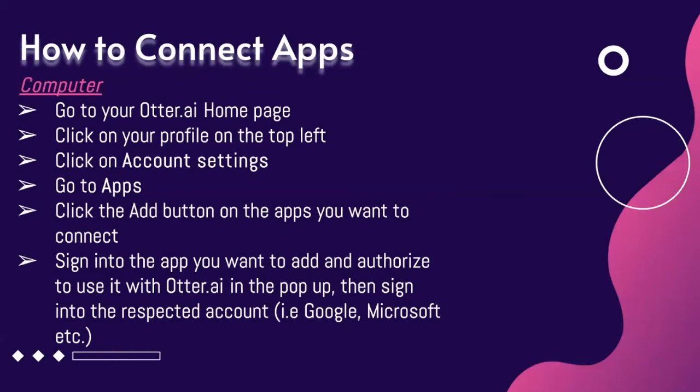To connect apps on the computer, go to the Otter.ai home page, click on your profile on the top left, click on Account Settings, go to Apps, and click the app button on the apps you want to connect.